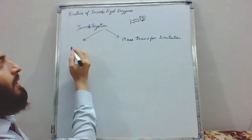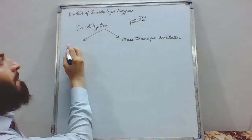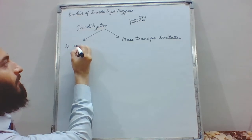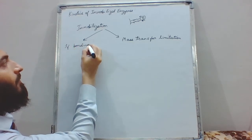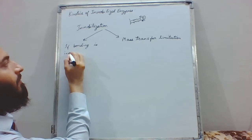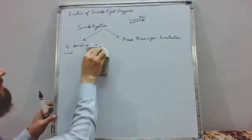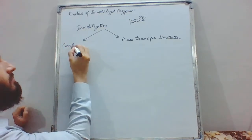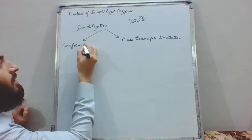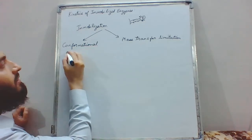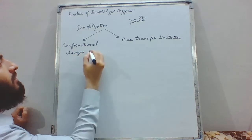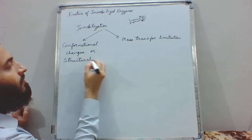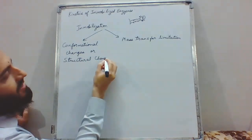So the immobilization process affects the structure of the enzyme when bonds are involved. It induces conformational changes or structural changes, and we know that structure is everything for the enzyme.